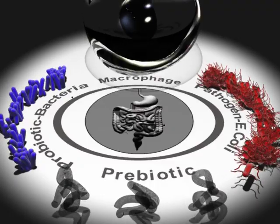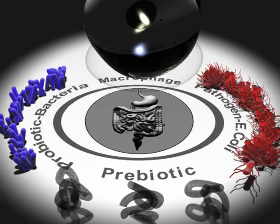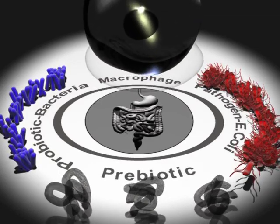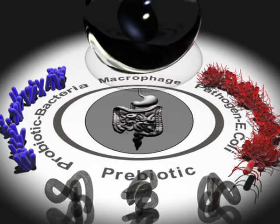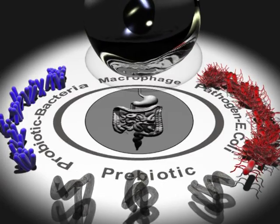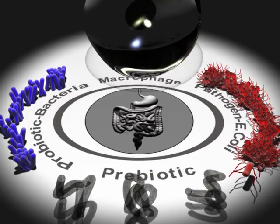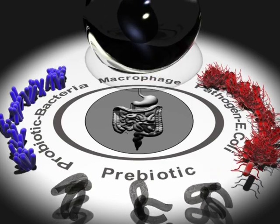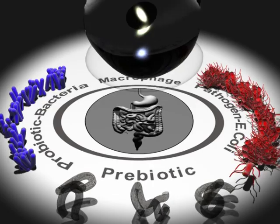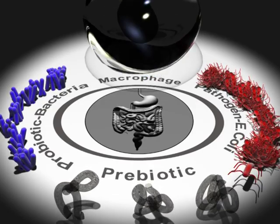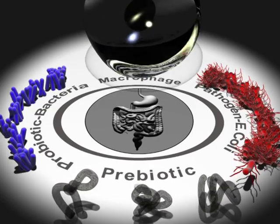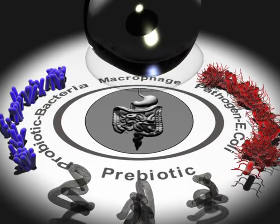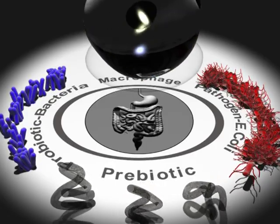The cast list. You can see here the probiotic bacteria represented in blue. Pathogens, for instance E. coli, in red. Prebiotics, which we will talk about later, are represented with a highly fibrous structure. We also have a macrophage cell, which is an example of an immune cell.